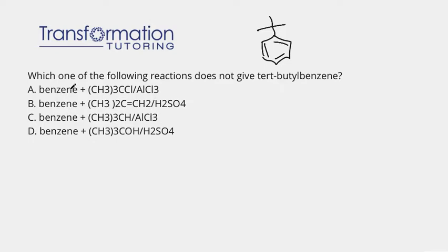Choice A is benzene with this molecule (CH3)3CCl with AlCl3, so let's go ahead and do it. We have a benzene ring and we have three methyl groups connected to a carbon that is connected to Cl, and we have AlCl3. This reaction is called Friedel-Crafts alkylation.